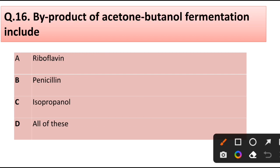Question number 60. Byproducts of acetone-butanol fermentation include: riboflavin, penicillin, isopropanol, or all of these. Correct answer is option A, riboflavin.